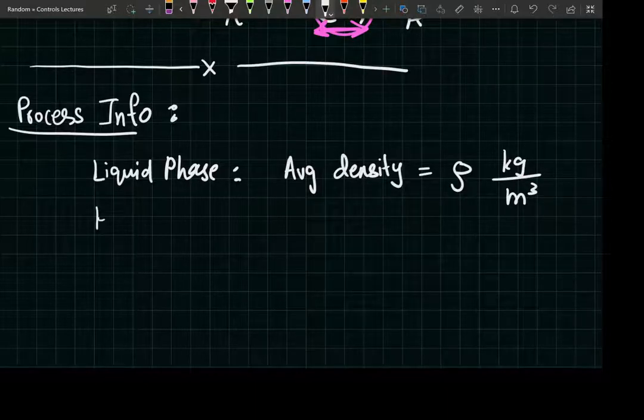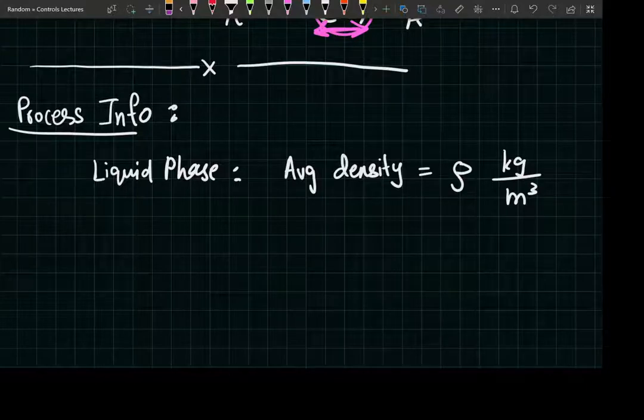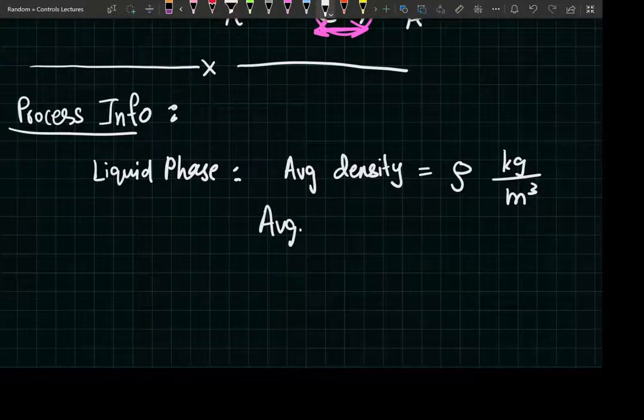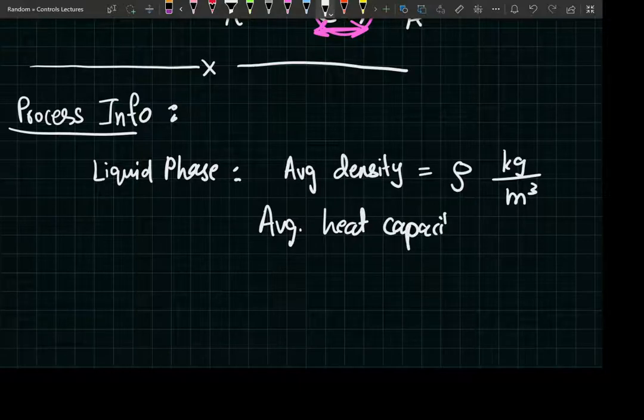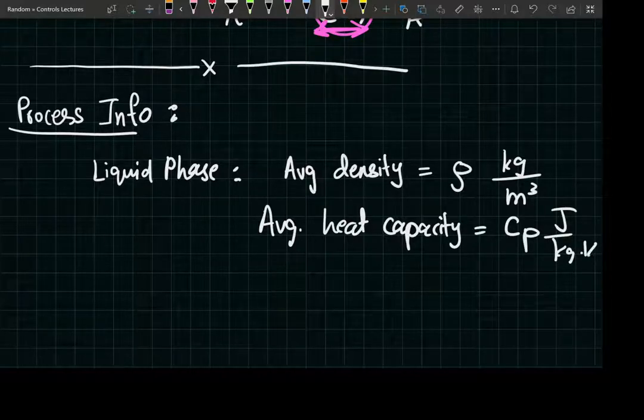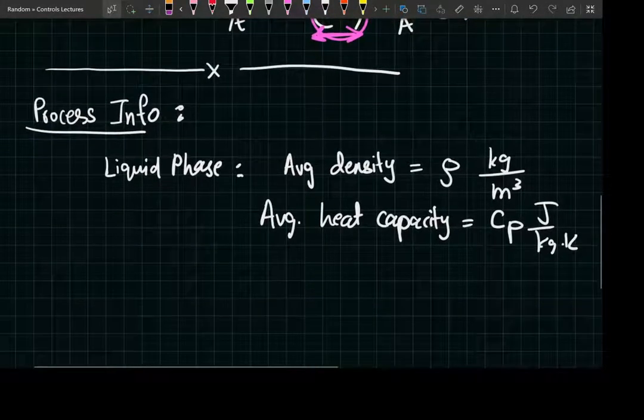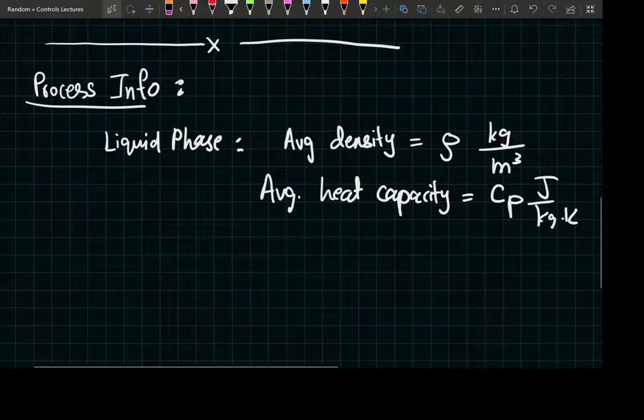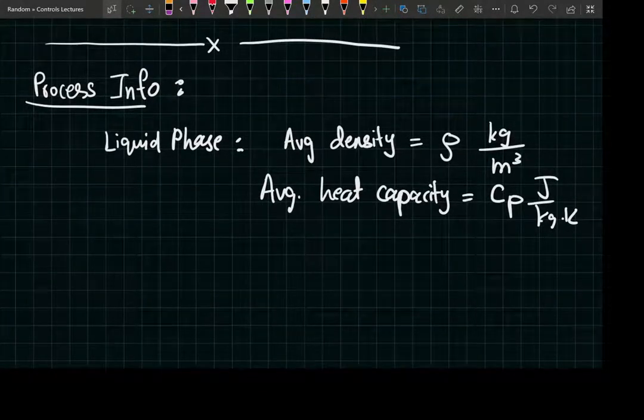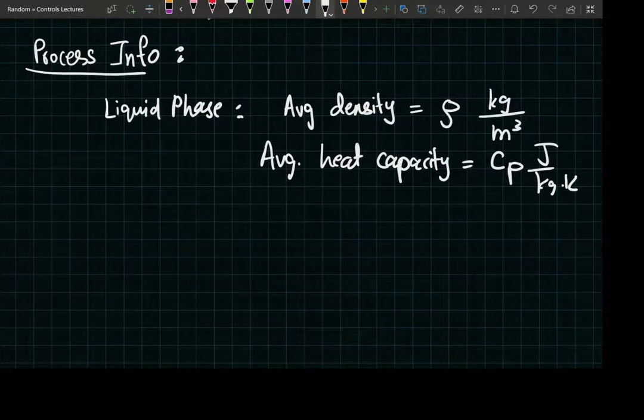What else we need: our heat capacities. We're going to use average heat capacity, average specific heat capacity, because our system is adiabatic and we will be needing an energy balance.